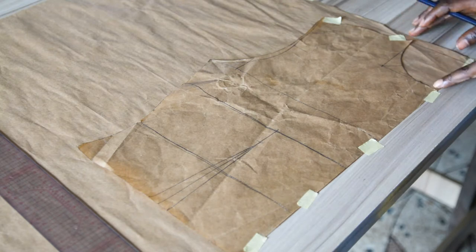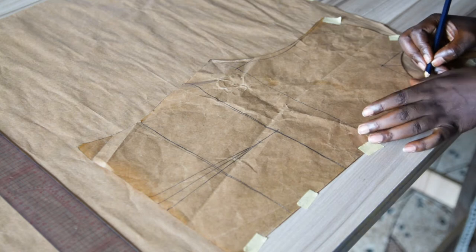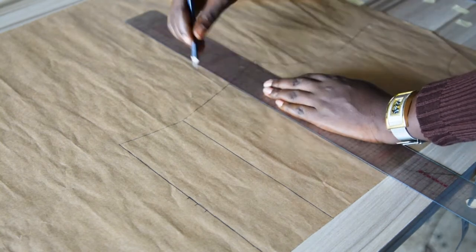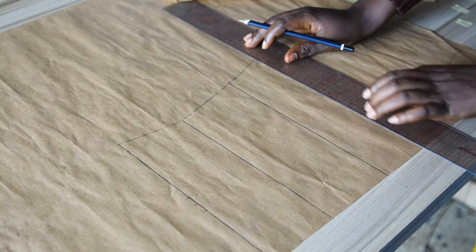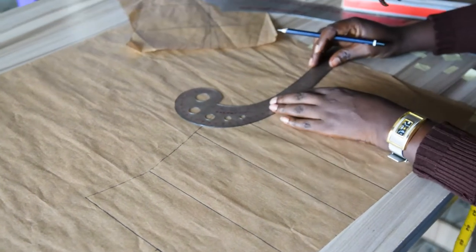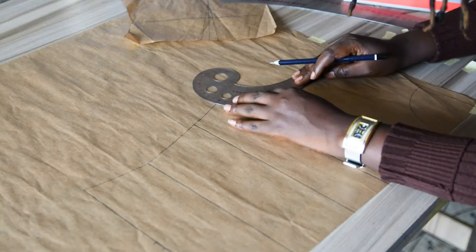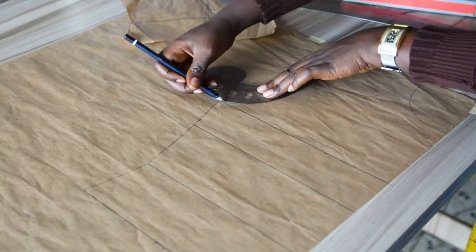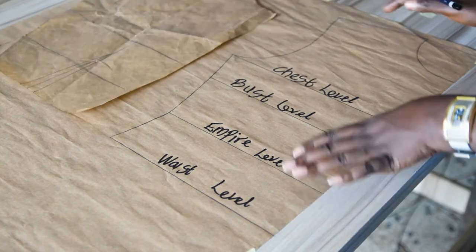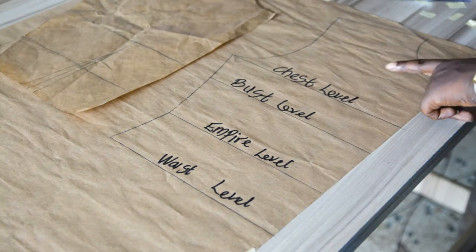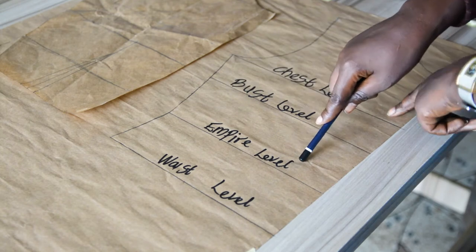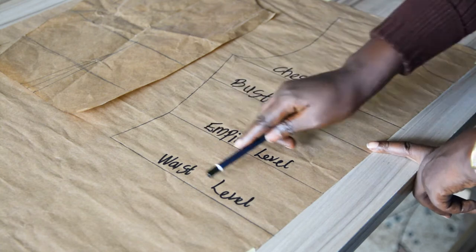It is necessary you draft your basic bodice block correctly. I will be transferring my basic bodice block on a fresh pattern paper. I have transferred my basic bodice block on a fresh pattern paper. This is the neckline, this is the armhole, this is the chest level, the bust level, the empire level — which is the same thing as under the bust — and this is the waist level.